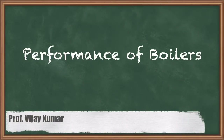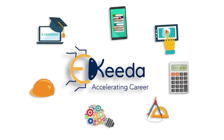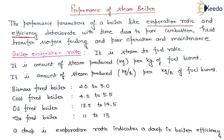In this video we will study about the performance of the boiler. In the last lecture we studied about the once-through boiler and supercritical boiler. The performance parameters of a boiler are evaporation ratio and efficiency — these are the two parameters which tell us the performance of a boiler.